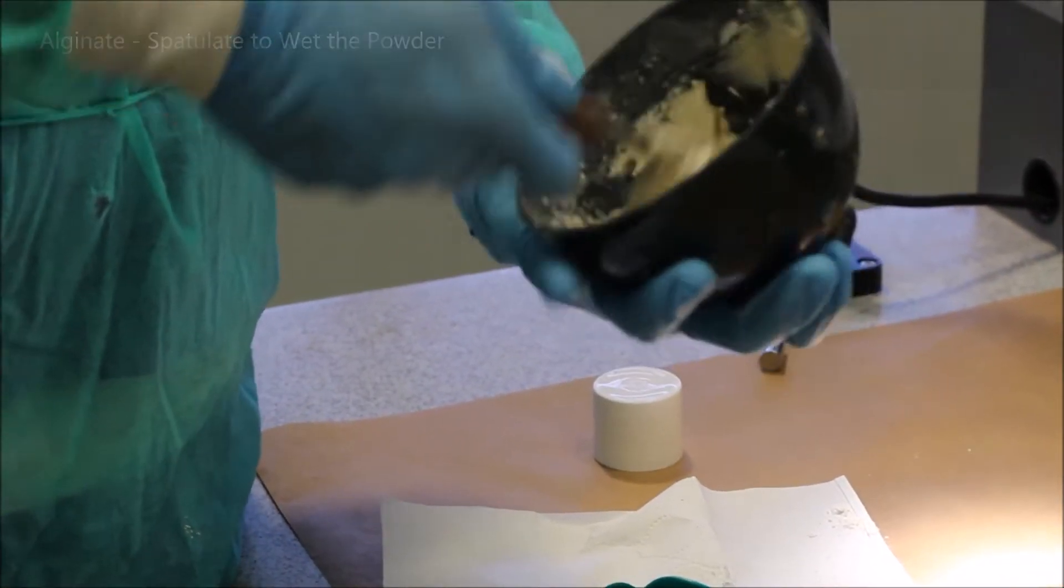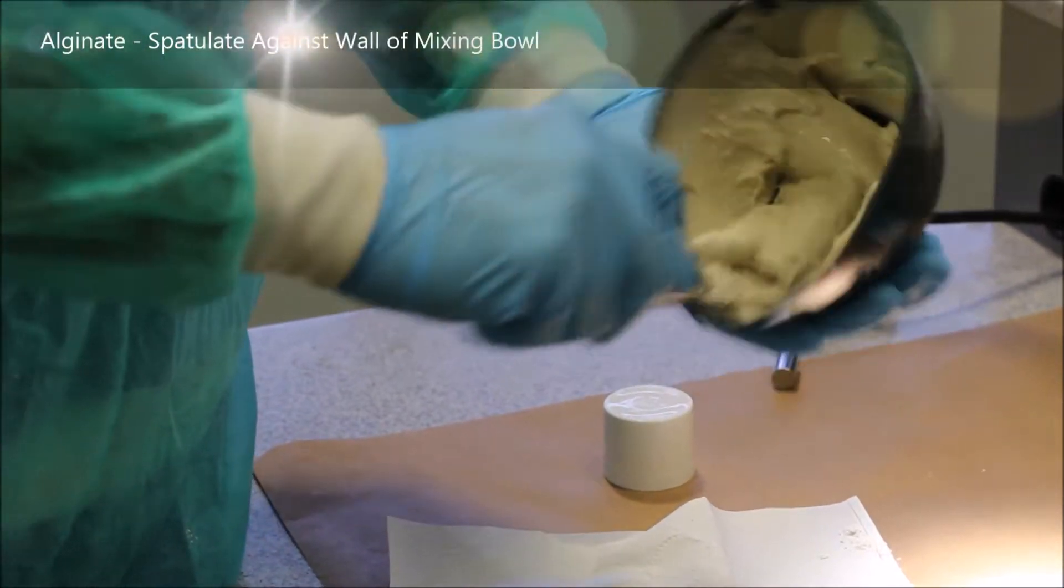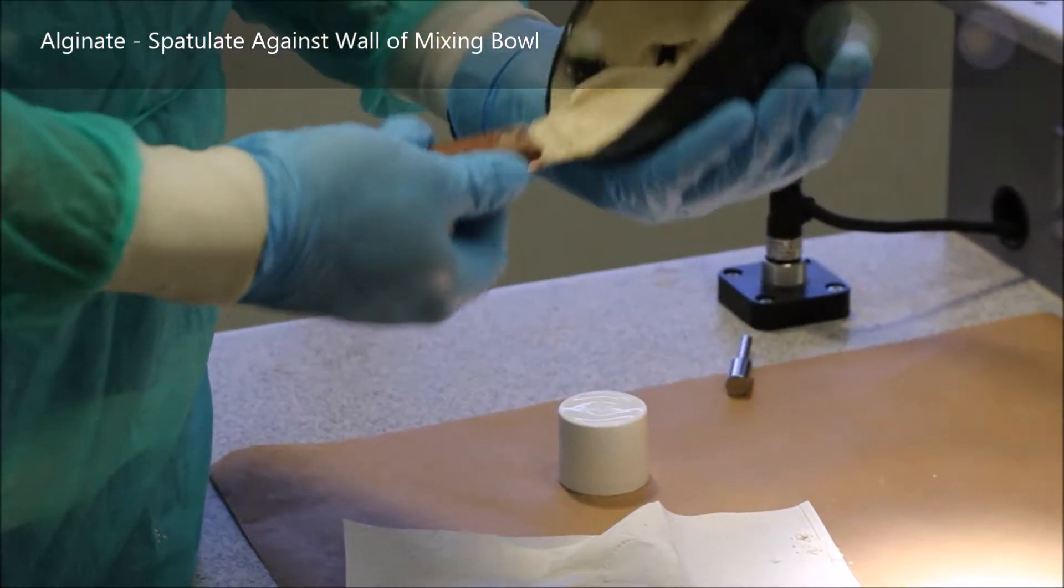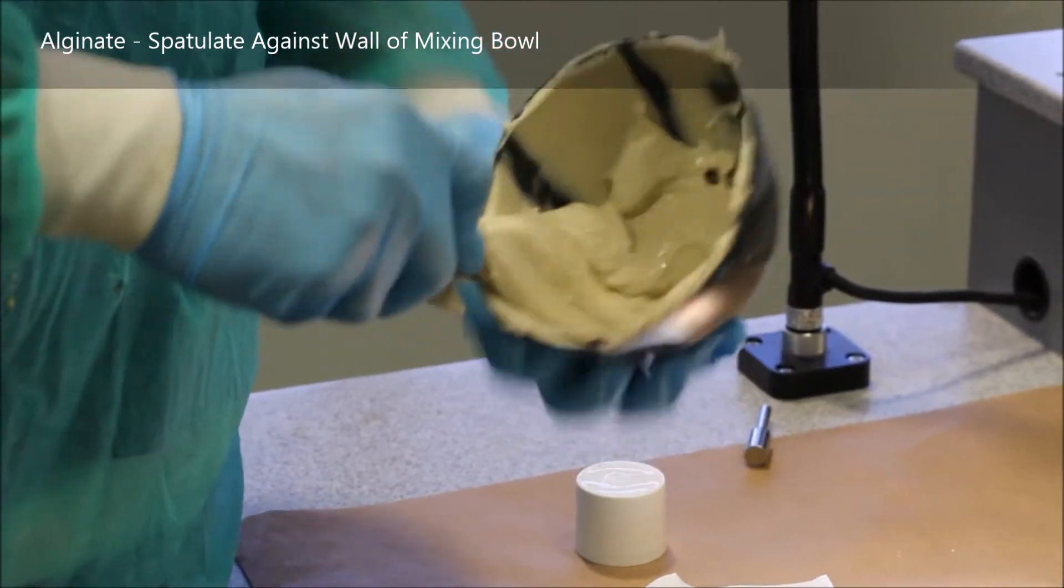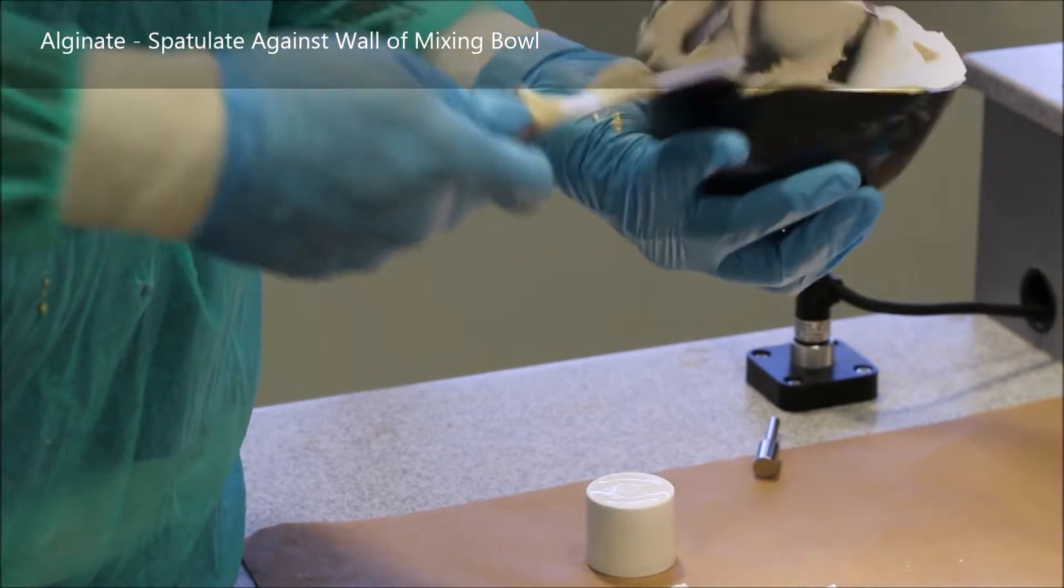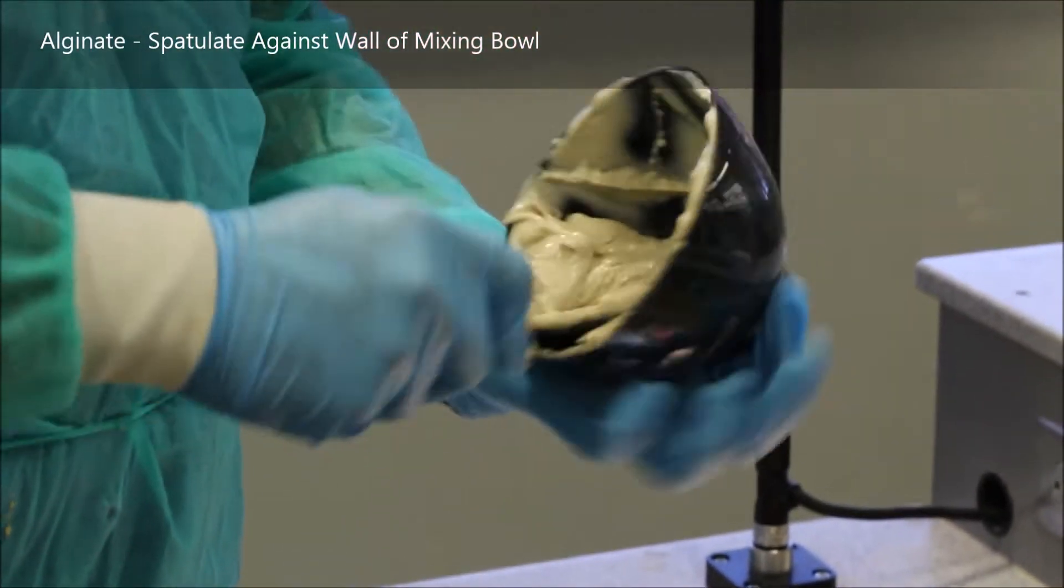As you finally feel that the powder is wet and it gets to a sort of doughy consistency, you can go ahead now and press it against the walls of the bowl. This will eliminate any bubbles from showing up in your impression.